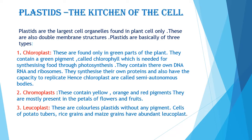Chloroplast — if you remember the word chlorophyll, which is related to plants and helps the plant to prepare its food. Chloroplasts are found only in the green parts of the plant. They contain a green pigment called chlorophyll which is needed for synthesizing food through photosynthesis. They contain their own DNA, RNA, and ribosomes. They synthesize their own proteins and also have the capacity to replicate. Hence, chloroplasts are also called semi-autonomous bodies.